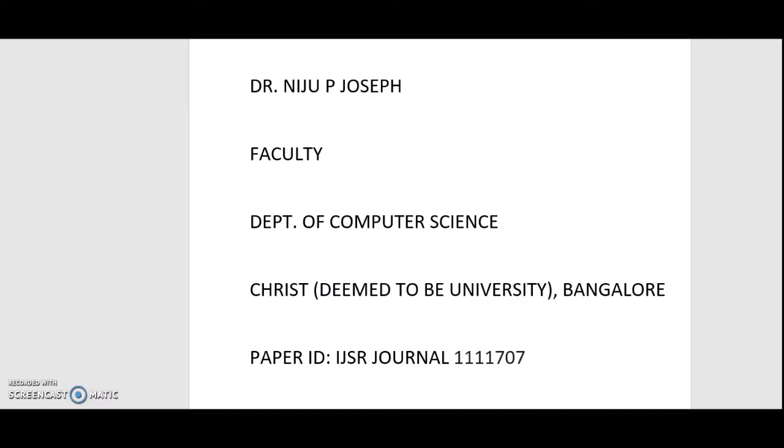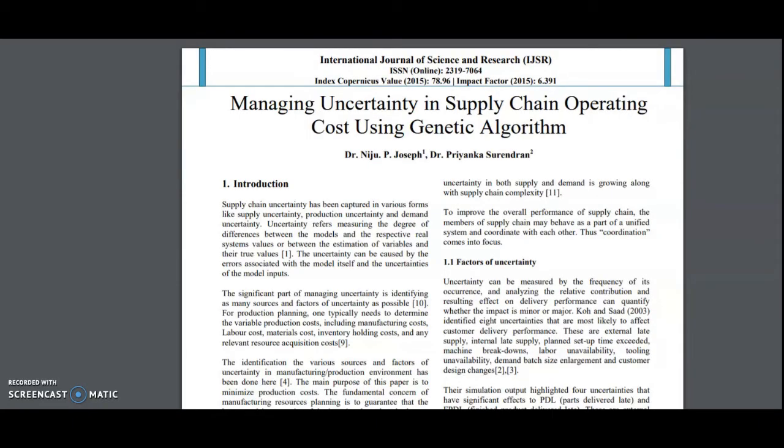Welcome all to the e-presentation of the journal paper in IJSR. I am Dr. Niju P. Joseph from Computer Science Department of Christ University, Bangalore. The paper which is for presentation is managing uncertainty in supply chain operating cost using genetic algorithm. This paper helps you when you factor in uncertainty problems in managing supply chain cost and operations. Let me start with the introduction.